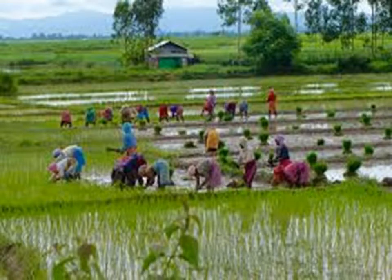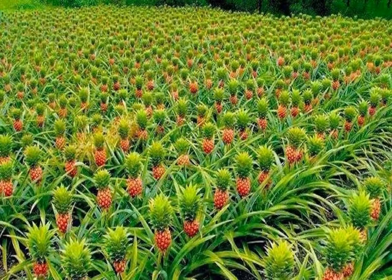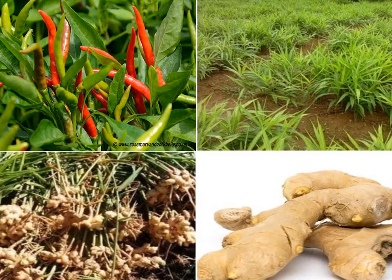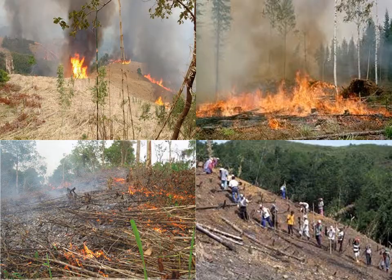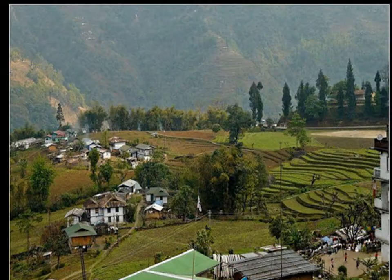Agriculture is the main occupation in all these states. Food grains such as rice and maize, fruits such as pineapple and banana, and spices like chilies and ginger are some of the crops of these states. The farmers practice Jum or shifting cultivation in all the states except Sikkim. In Sikkim, farmers practice terrace farming and stay in one place to cultivate their crops.